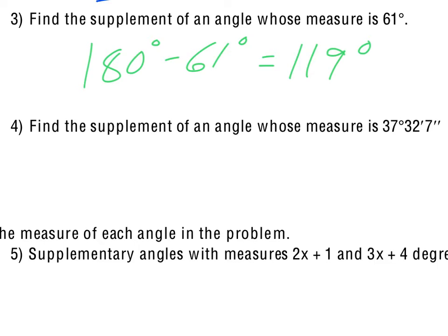For number 4, we're also talking supplementary angles, but we have degrees, minutes, and seconds. So again, what I think of is my 180 degrees is 179 degrees, 59 minutes, and 60 seconds. So there, the 60 seconds makes a whole minute, then we have 60 minutes, which 60 minutes makes another degree, so it's the same as 180 degrees.